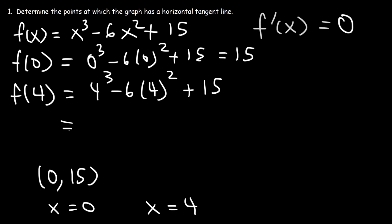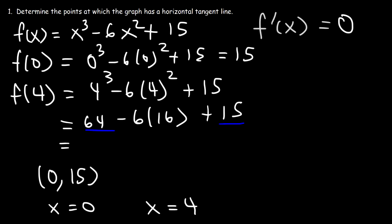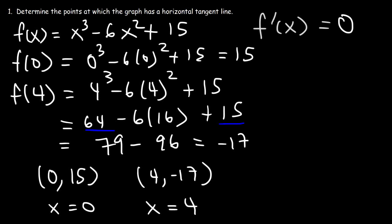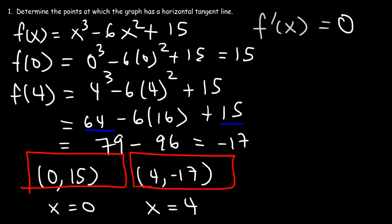For f of 4: 4 to the third power is 64, 4 squared is 16, and 64 plus 15 is 79. Then 6 times 16 is 96, and 79 minus 96 is negative 17. So the second ordered pair is (4, −17). These are the locations where the graph has a horizontal tangent line.